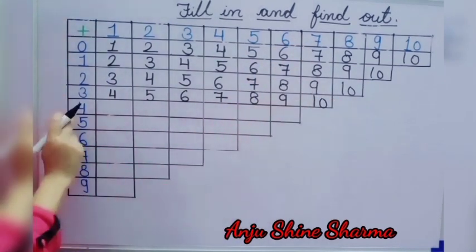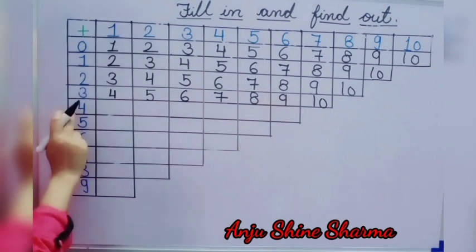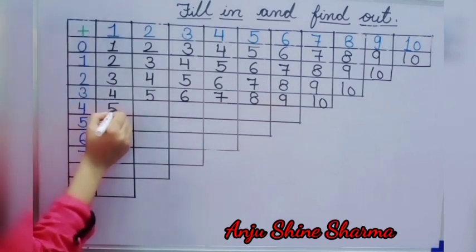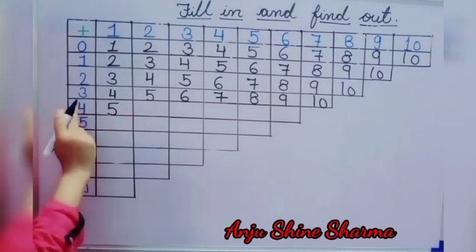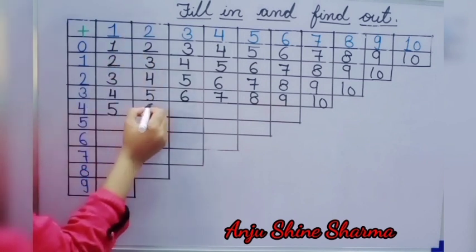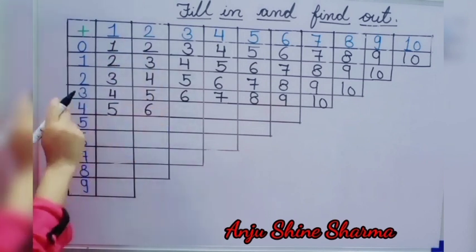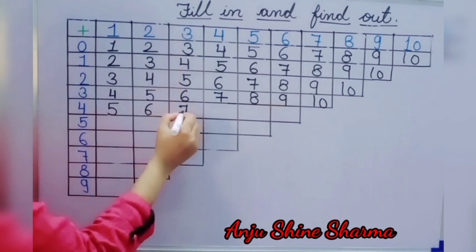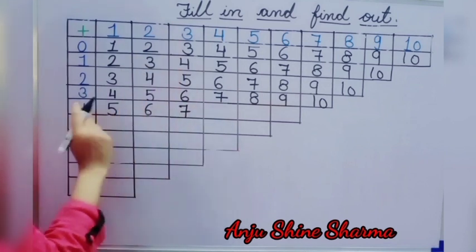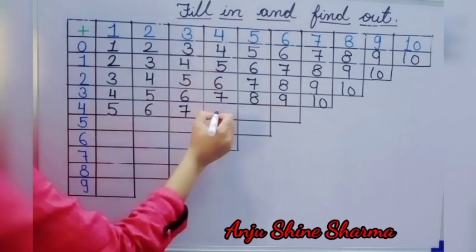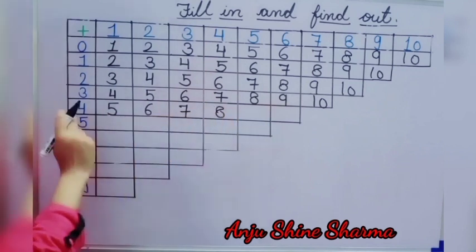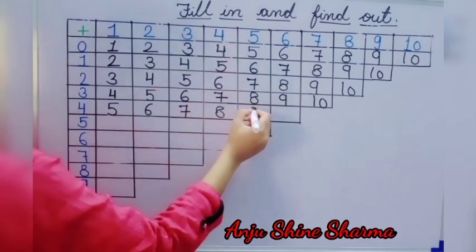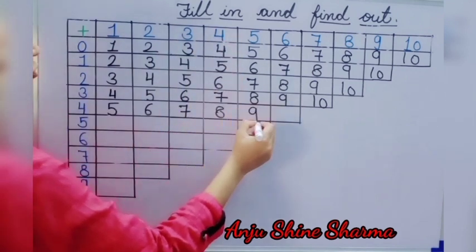Next number is 4. We start 4 plus 1 is equal to 5. Then 4 plus 2 is equal to 6. 4 plus 3 is equal to 7. Then 4 plus 4 is equal to 8. Then 4 plus 5 is equal to 9.